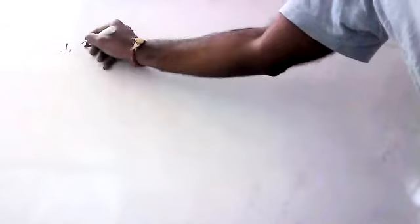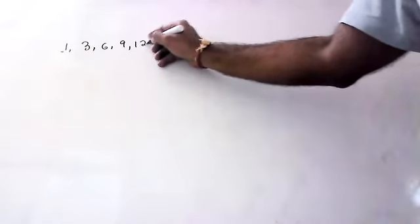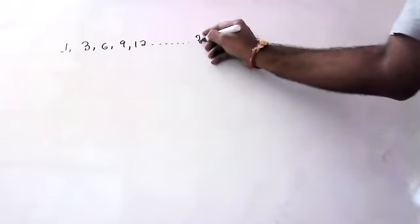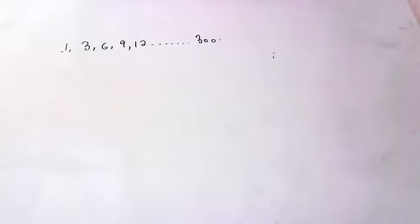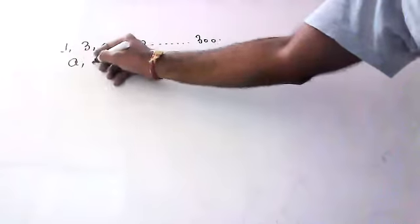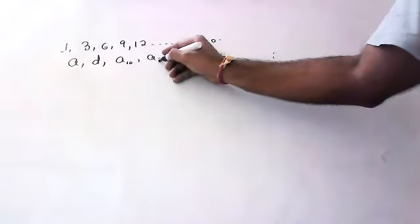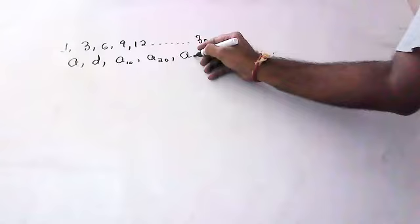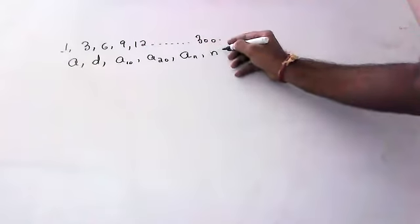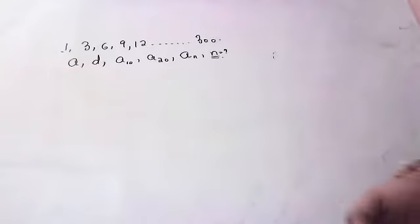So children, coming to the first sum. What is the first sum? 3, 6, 9, 12, and so on up to 300. In all these sums we have to find out a common difference, the 10th term, 20th term, and n — where n means the number of terms. I will show you three or four sums so you can understand.